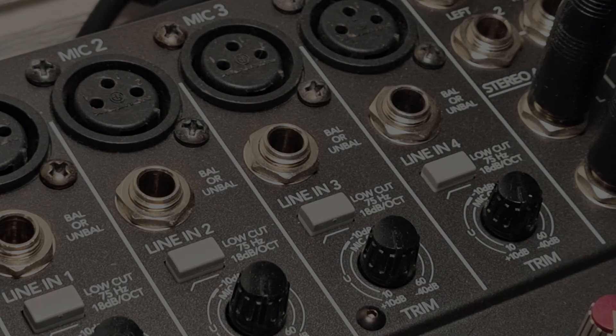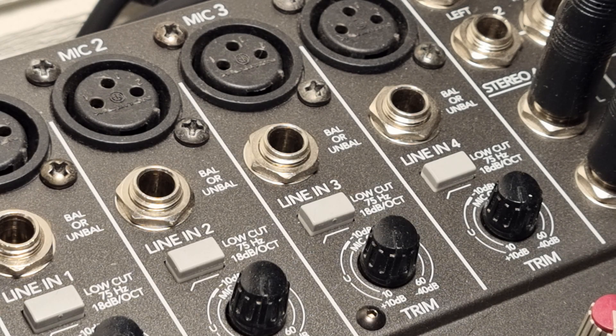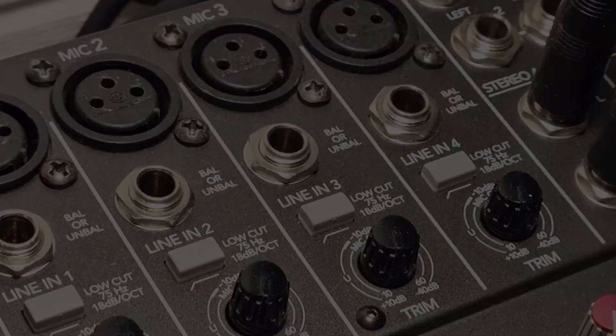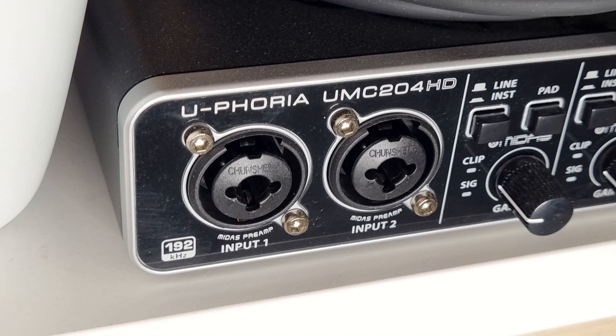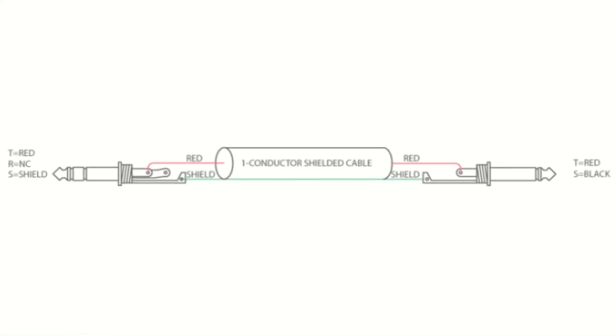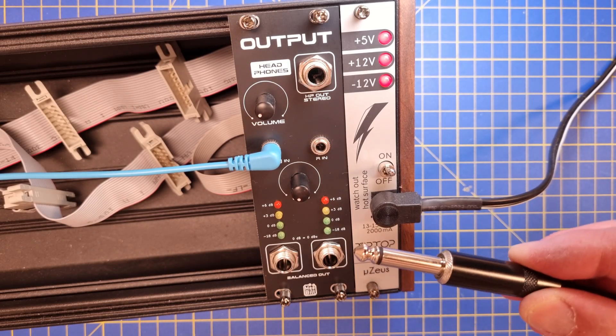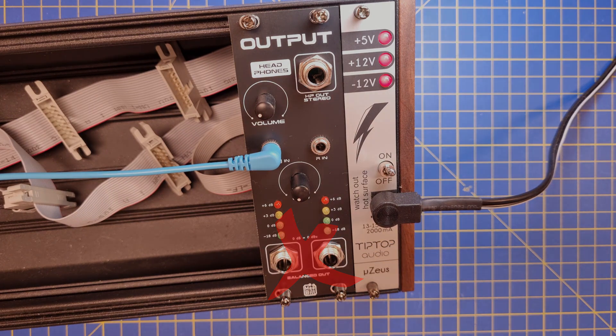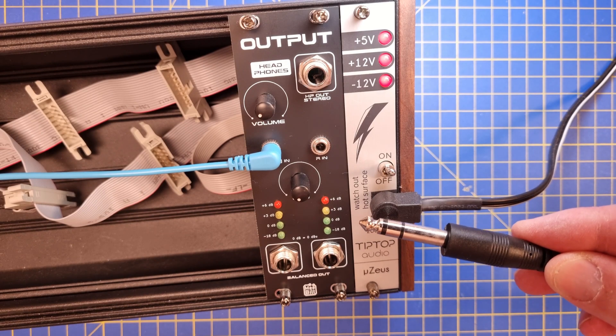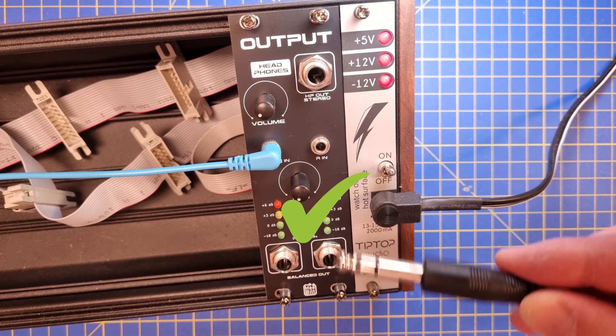To make the most use of the module's potential, make sure that you hook it up to the balanced line inputs of your mixer or audio interface. Check the documentation of your equipment how to do this. If your equipment only has unbalanced line inputs, you will need an adapter cable between the TRS output of the module to the TS input of the audio equipment. Do not connect an unbalanced TS plug to the module since it will short the negative side of the balanced output driver and it may cause distorted audio or even break the module.